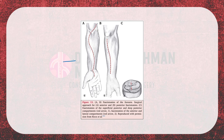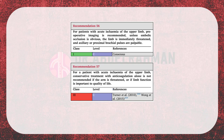This image shows the incision sites for both volar and dorsal fasciotomy to decompress the compartments of the forearm. The recommendations for patients with acute upper limb ischemia: preoperative imaging is recommended unless the etiology is obviously embolic, the limb is immediately threatened, and axillary or proximal brachial pulses are palpable. Conservative treatment with anticoagulation alone is not recommended if the arm is threatened or if limb function is important to the patient's quality of life.